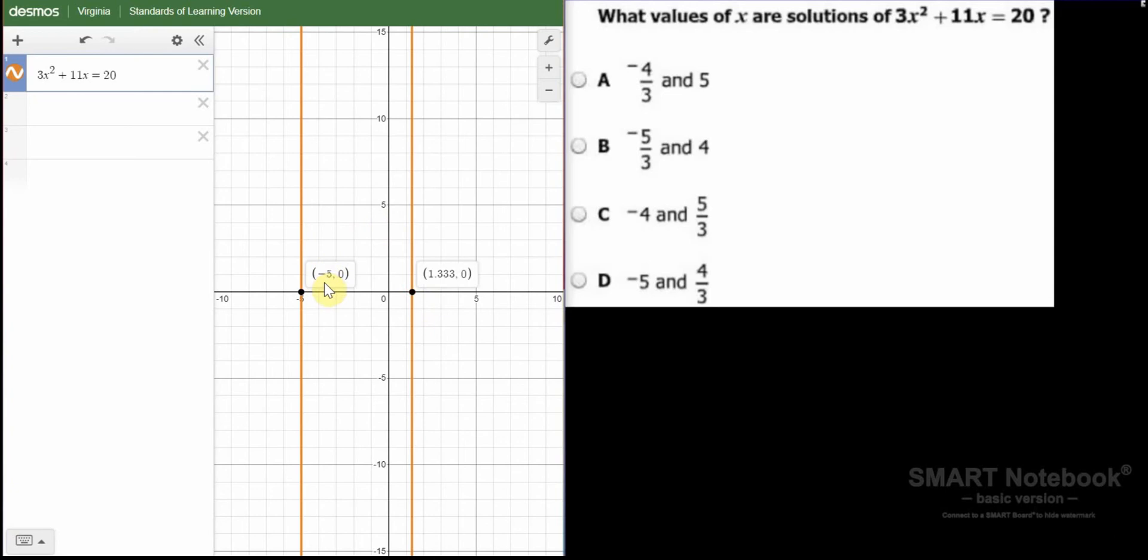And so I see negative 5 as one of my x values and 1.33. The only one that has negative 5 is this one. You may have to enter this into your calculator to confirm that that's 1.333 repeating. But this is your solution, negative 5, and this is 1.33 repeating.